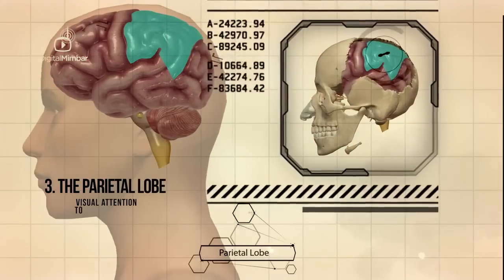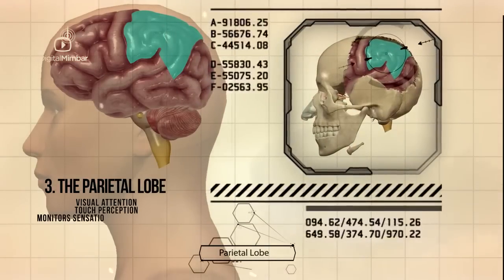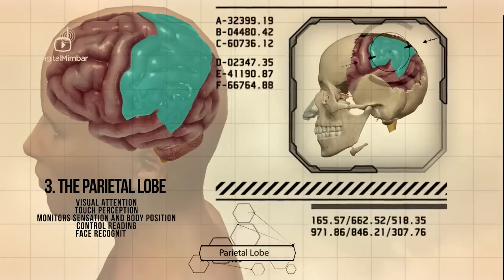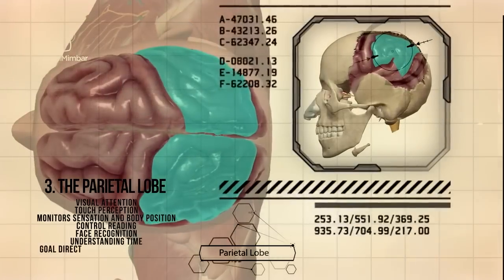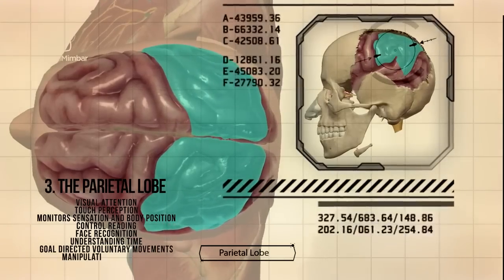The parietal lobe is responsible for visual attention, touch perception, monitoring sensation and body position, controlling reading, face recognition, understanding time, goal-directed voluntary movements, and manipulation of objects.